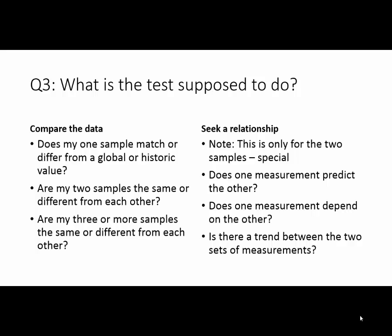Question 3: What is the hypothesis test supposed to do? Either it's a comparison of the data — between groups, or from your one group to a historic value — or you're seeking a relationship between two sets of data. Comparing is by far the most common. With one sample, you want to know if results are the same or different from a historic or global value. With more than one sample, you're asking whether differences between groups are due to random chance or because there's something genuinely different about the populations each sample came from.